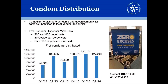The Condom Distribution Program is a campaign to distribute condoms and advertisements for safer sex practices to local venues and clinics. The program gives out free condom dispenser wall units in 200 and 800 count units, and also has cookie jar-like dispensers — there are over 30 around the state. Taken altogether, there are over 100 dispensers statewide. In any three-month period, we average about 100,000 condoms distributed to agencies, clinics, and the public around the state. If you're interested in learning more, contact the Department of Health at the number provided.